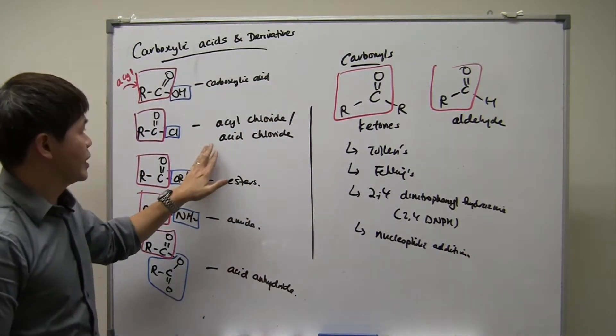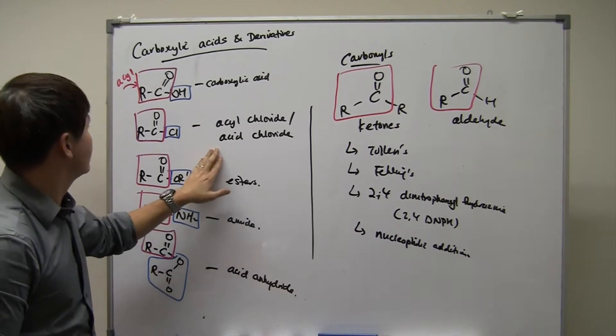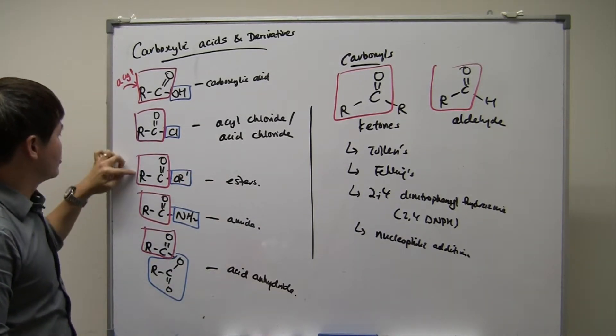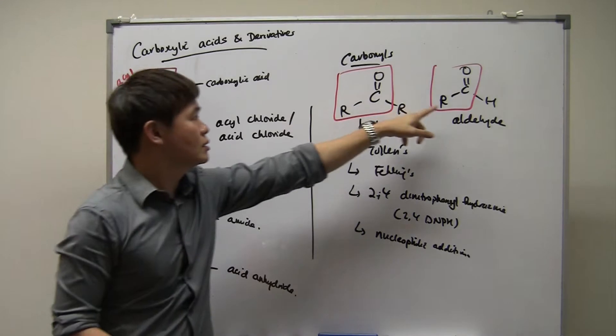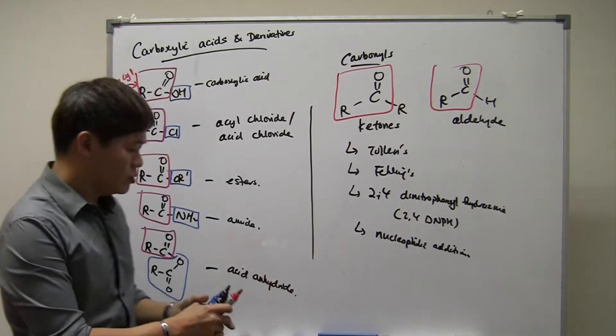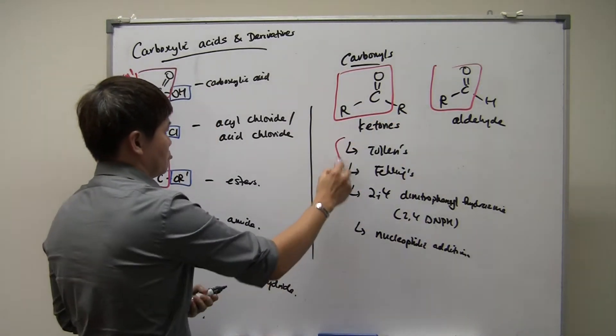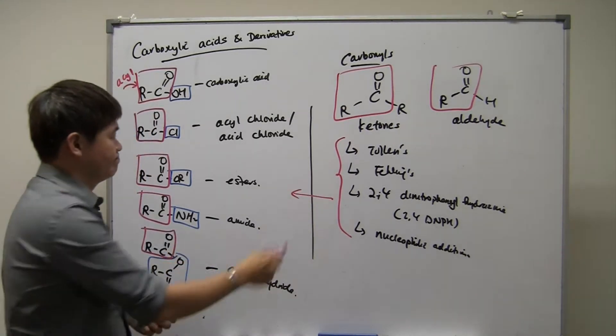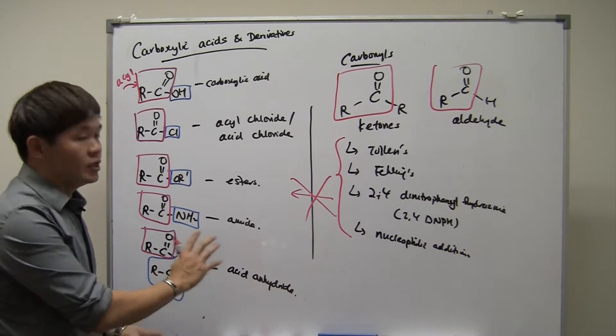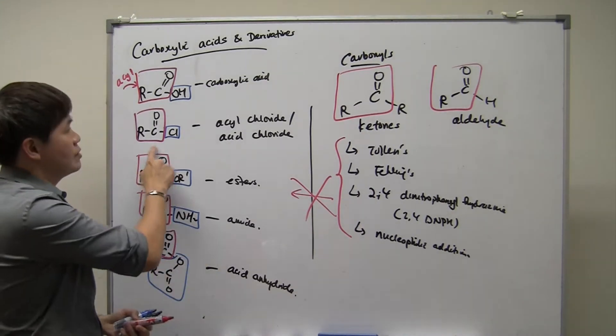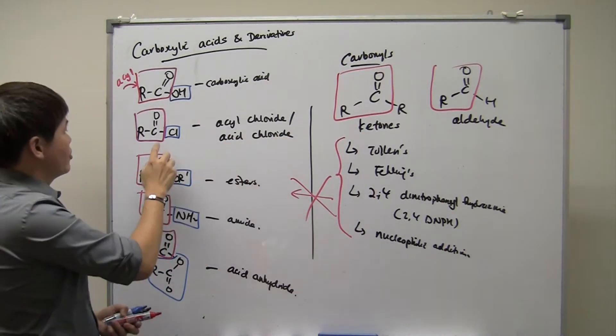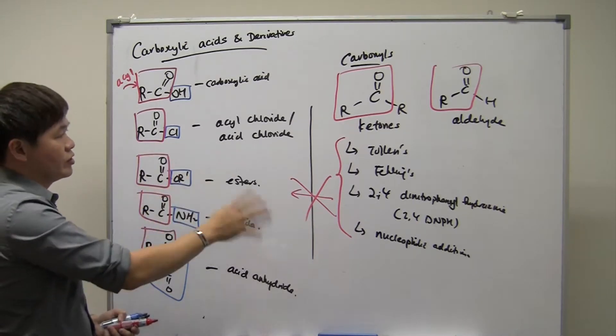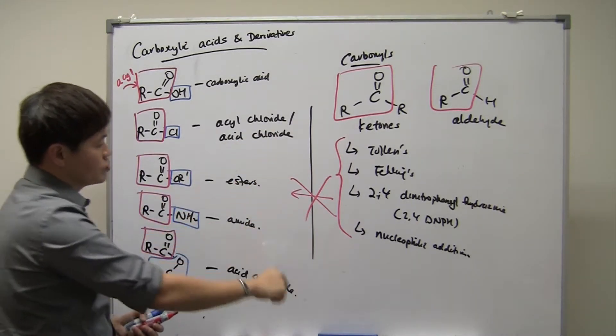However, when you go from the carbonyls into this chapter, the acids and derivatives, you find that the acids and derivatives, even though it contains this RCO group that's very similar to these RCO groups in the carbonyls, all these reactions, are they found in the chapters of acids and derivatives? The answer is no. In fact, the acids and derivatives don't have any of these reactions at all, even though it contains the same groups.